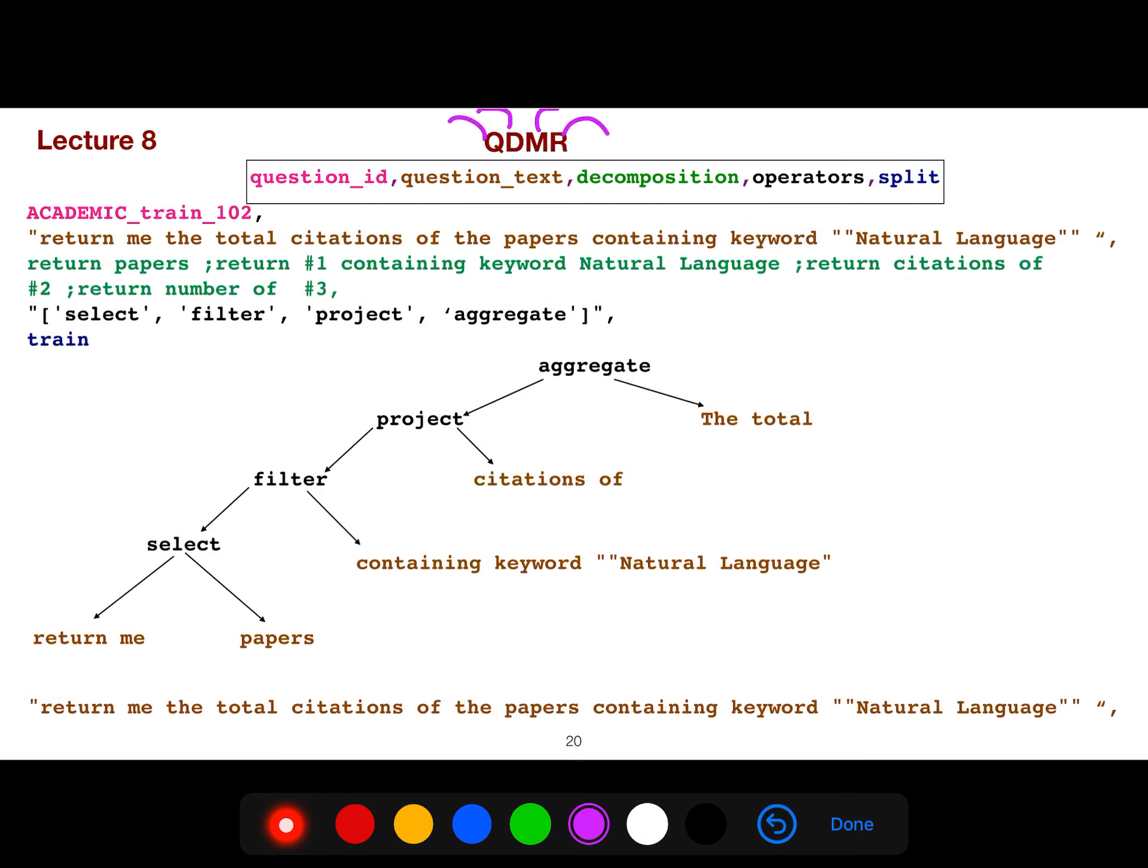This is the question decomposition meaning representation. It's a middle layer formalism. Because people understood that we don't have to work it directly. Just let's skip and get around that and be smart instead of working hard. So this is why they created this beautiful dataset in Allen Institute. For example, returning the total citations of the paper. You can think about it as a tree like this. We have a set of labels. I call these operators in my paper. I call them operators.